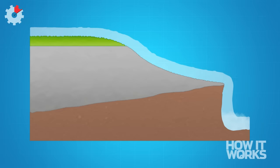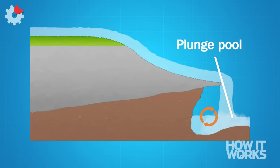The force of the falling water hitting the soft rock below creates a plunge pool which is deepened by the abrasion of falling angular rock.